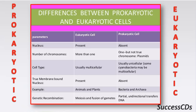Examples of eukaryotic cells are animal cells and plant cells, while examples of prokaryotic cells are bacteria and archaea. The last parameter is genetic recombination: in eukaryotic cells it occurs through meiosis and fusion of gametes, whereas in prokaryotic cells it is through partial unidirectional transfer of DNA.